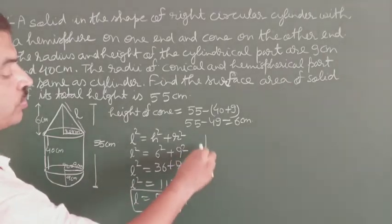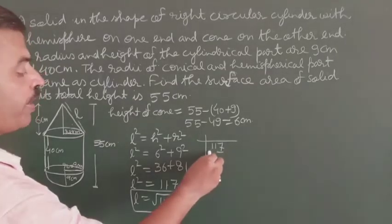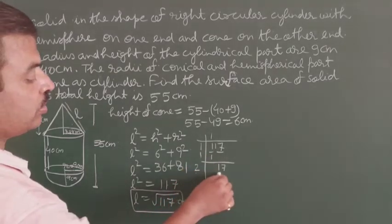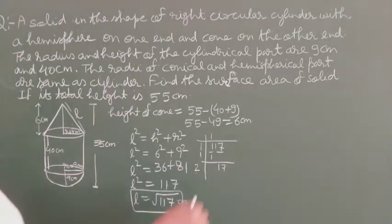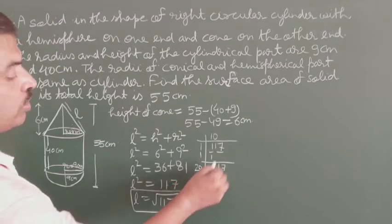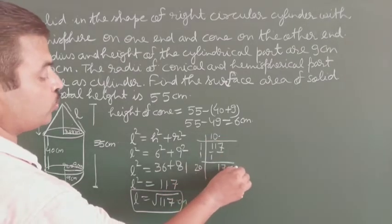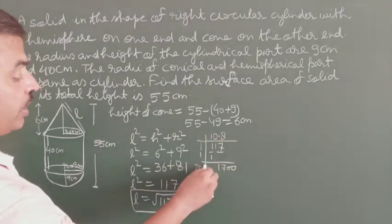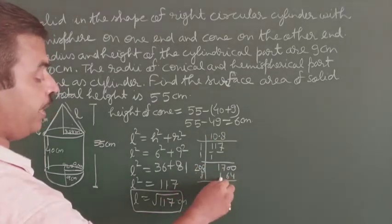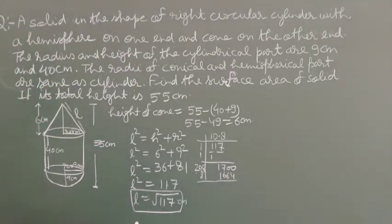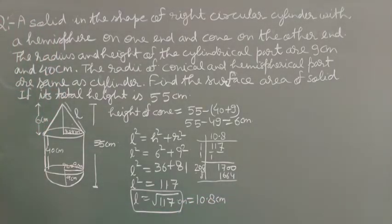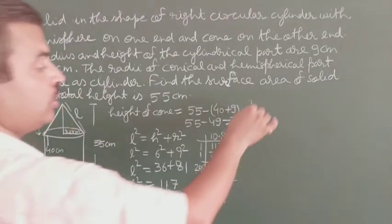We have to find the square root of 117. Making pairs from the right side: the integer part gives 10, then with the decimal: the square root of 117 works out to approximately 10.8. So L equals 10.8 cm.